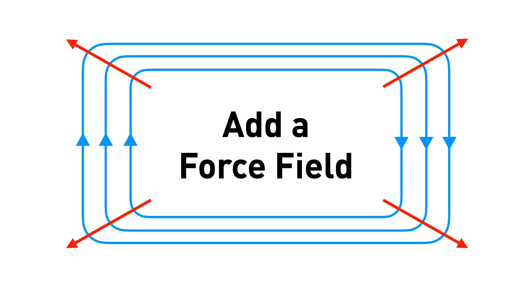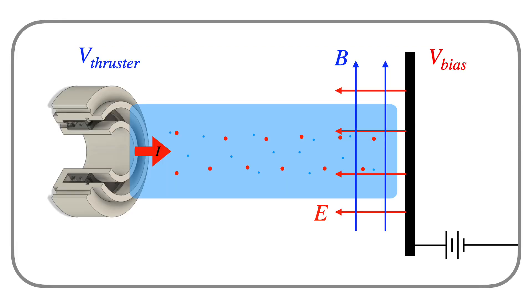We add another force field, specifically a magnetic field. If we set up a magnetic field perpendicular to the electric field, we can redirect the electrons, making it harder for them to reach the plate. This decouples the thruster voltage from the plate voltage, and allows our electric field to slow down the ions.